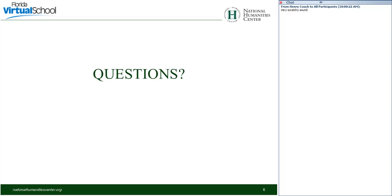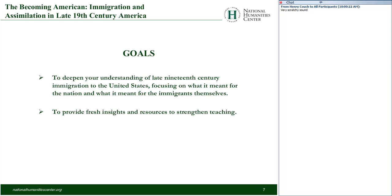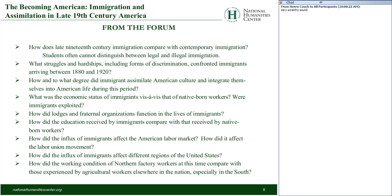Our goals today are simple — we have two. One, to deepen your understanding of late 19th century immigration to the United States, focusing on what it meant for the nation and what it meant for the immigrants themselves. The forum offered some very strong comments — you're interested in how late 19th century immigration compares with contemporary immigration, and a few noted that students often cannot distinguish between legal and illegal immigration. You wanted to know about the struggles and hardships, including forms of discrimination, confronted by immigrants arriving between 1880 and 1920, and how and to what degree immigrants assimilated into American culture during this period.